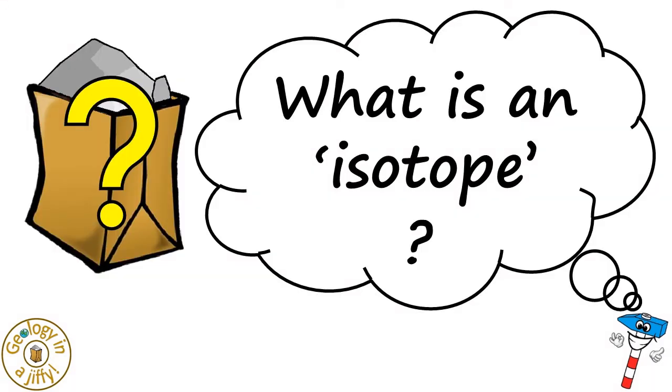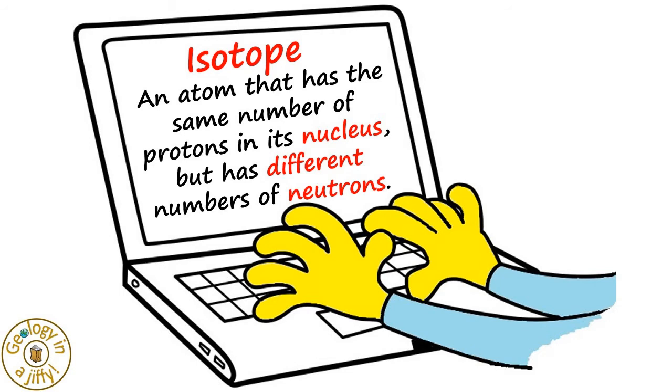What is an isotope? An isotope is an atom that has the same number of protons in its nucleus but has different numbers of neutrons in the nucleus.